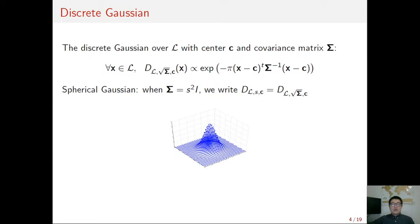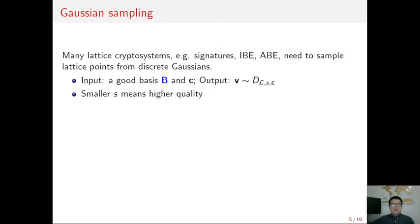With a good basis, we can efficiently sample from some spherical Gaussian of relatively small width, but the Gaussian itself reveals nothing about the good basis. For this reason, discrete Gaussian is widely used in lattice cryptosystems including signatures, IBE, and ABE. In these cases, the good basis is given by the lattice trapdoor, and the target distribution is some spherical Gaussian of a given center.